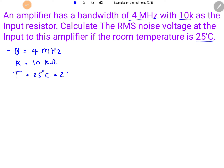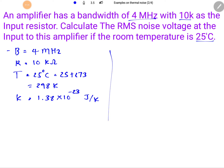In terms of Kelvin, 25 degrees Celsius will be 25 plus 273, which gives 298 Kelvin. Boltzmann's constant is 1.38 × 10⁻²³ Joule per Kelvin. These are the given data to calculate RMS noise voltage.